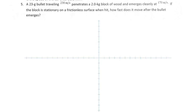Here is the fifth question. A 23-gram bullet traveling at 230 meters per second penetrates a 2-kilogram block of wood and emerges cleanly at 170 meters per second. If the block is stationary on a frictionless surface when hit, how fast does it move after the bullet emerges? Important here is that it's a frictionless surface, which means there are no external forces acting. Conservation of momentum can be applied only when there are no external forces acting on the system.